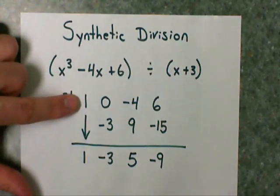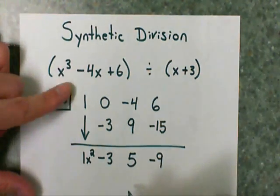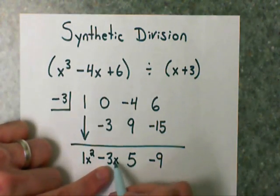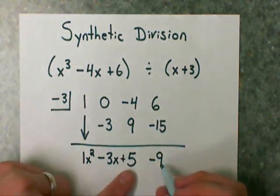The first was an x to the 3rd, so my answer is going to be x squared. This was an x squared, so I'm going to do one less power, which is an x. I'm going to place a plus sign to separate it. And this is my remainder.